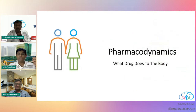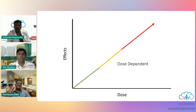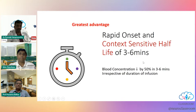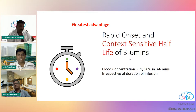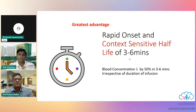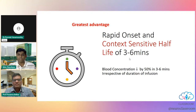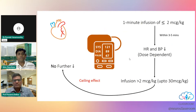Coming to pharmacodynamics — what the drug does to the body. There is a dose-dependent linear increase in effect as you increase the dose. The greatest advantage is the rapid onset and the 3 to 6 minute context-sensitive half-life, meaning blood concentration decreases by 50% within 3 to 6 minutes regardless of the duration of the infusion — even after a 3, 4, 5 or 6 hour infusion.